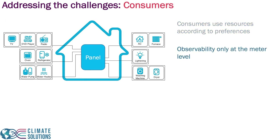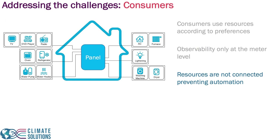You have a meter that measures the total consumption of power happening in this home at the panel level. Typically, we only had observability of consumption at this meter level, and resources were not connected, which meant there was no real way to influence and automate when some of these appliances are actually operating while respecting consumer preferences.